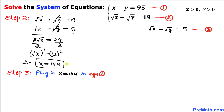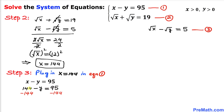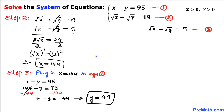Now let's plug x equals 144 into equation one. Replacing x with 144: 144 minus y equals 95. Subtracting 144 from both sides, we get negative y equals negative 49, so y equals 49.